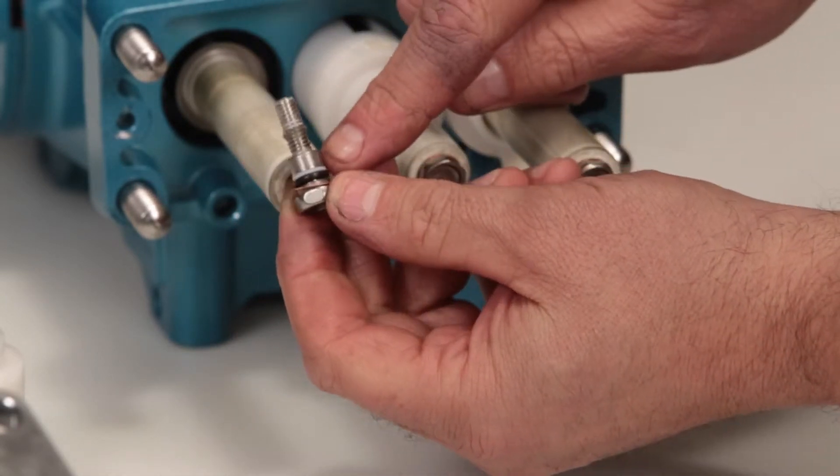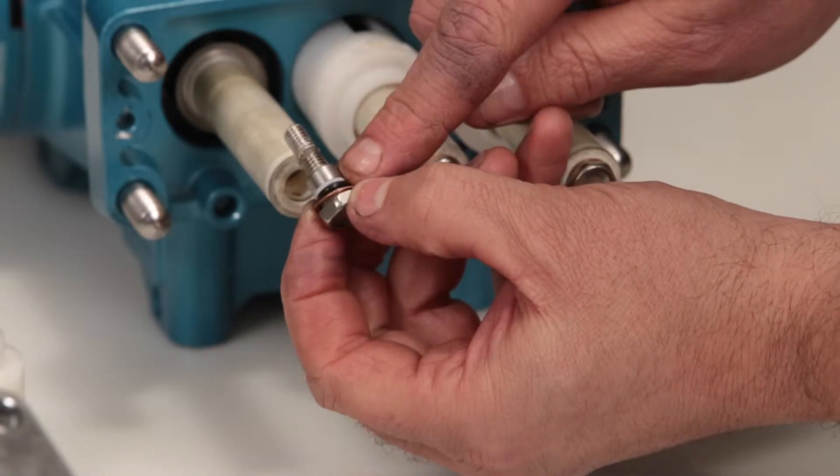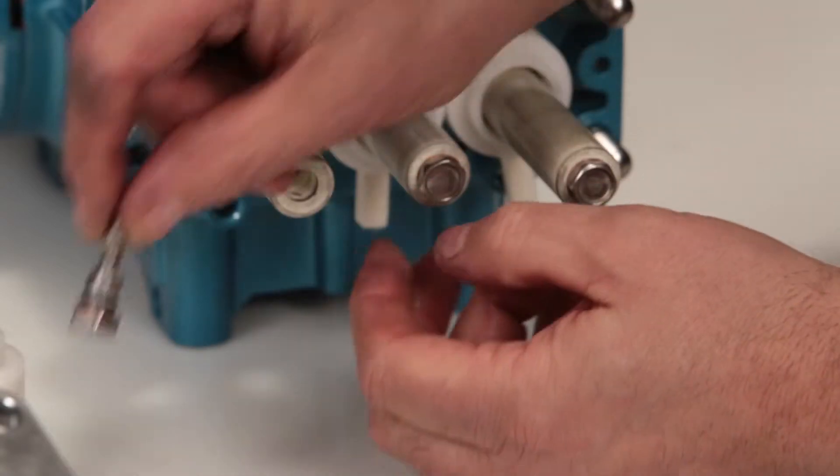The plunger retainer contains an o-ring, backup ring, and copper gasket. Inspect the o-ring, backup ring, and copper gasket for cuts, nicks, or damage.